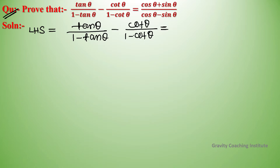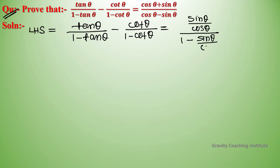First, we will change everything into terms of cos and sin. Tan theta becomes sin theta upon cos theta, so we have sin theta upon cos theta over 1 minus sin theta upon cos theta. Similarly, cot theta becomes cos theta upon sin theta, giving cos upon sin over 1 minus cos theta upon sin theta.